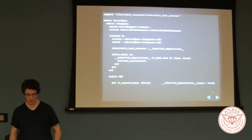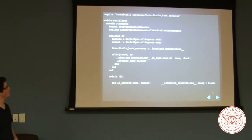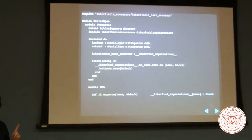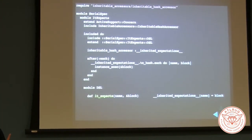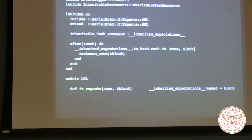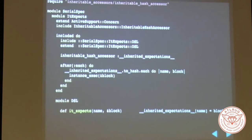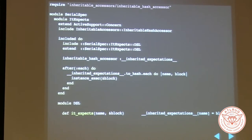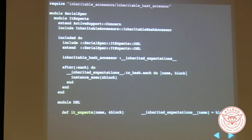I did want to show you just really quickly — this is actually all the code. It seems to have gotten truncated or something, but this is actually all the code for the it_expects stuff. It's like 20 lines of code. It's really, really simple. So if you like the pattern, check out the library and give me some feedback.